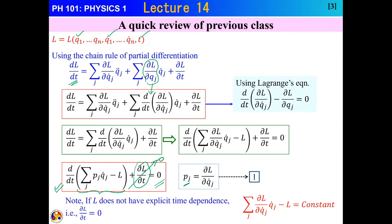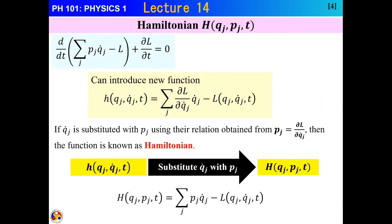If the Lagrangian does not have an explicit time dependence, then ∂L/∂t = 0, so d/dt of the bracketed term is also zero. The derivative of a function being zero means the function is constant. Therefore, the summation of (∂L/∂q̇_j) · q̇_j minus L equals a constant. We introduced a new function called the Hamiltonian H defined in this functional form.